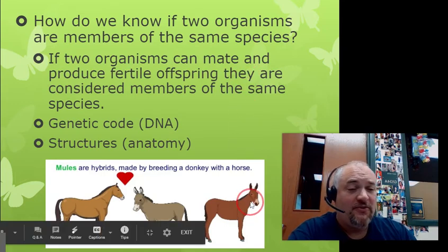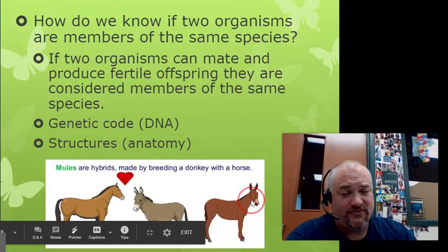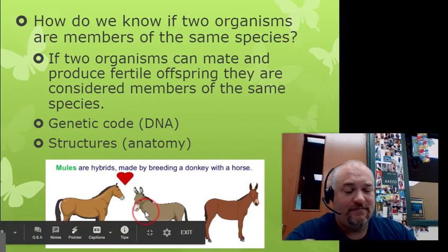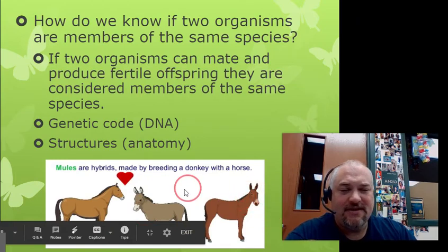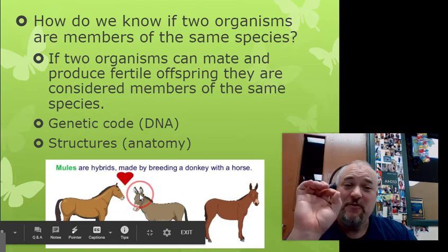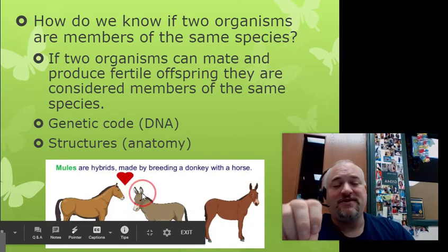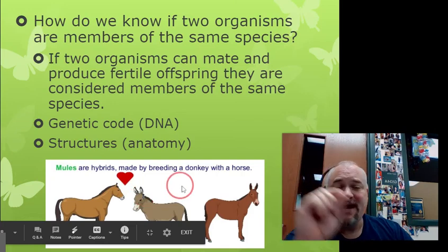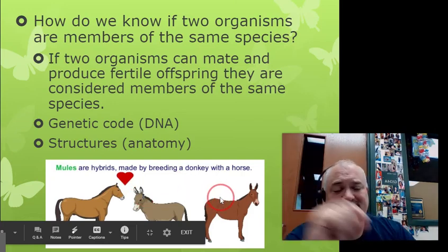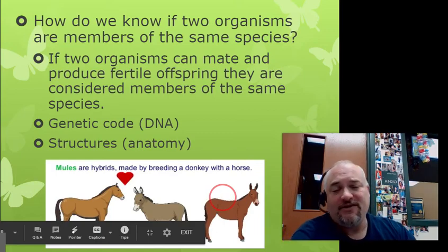Mules cannot mate — mules cannot have more mules. The only way to get mules is to have a horse and a donkey mate, so mules are a hybrid. They're not a separate species, and horses and donkeys are separate species — they're the same genus, almost the same species, but not quite, because they can have kids but the kids can't have kids. They can't perpetuate that species into the future.